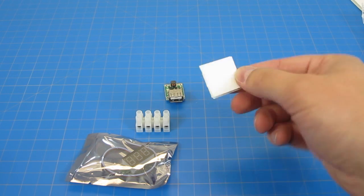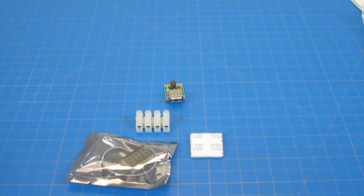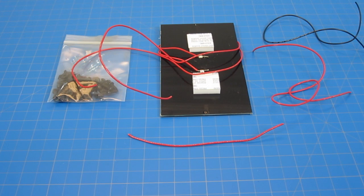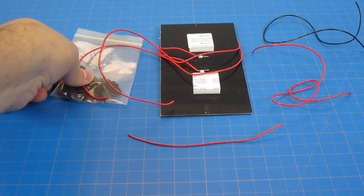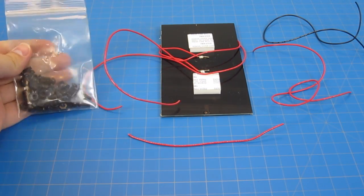We have some double sided foam tape to keep the USB circuit in place. Additionally we have a few other items as well, including our bag full of screws and nuts.